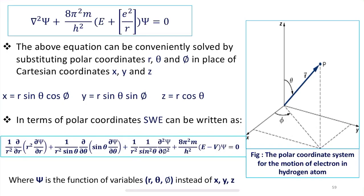The relation between the two types of coordinates is: x = R sinθ cosψ, y = R sinθ sinψ, and z = R cosθ. In terms of polar coordinates, the Schrödinger wave equation can be written by substituting polar coordinates R, θ, and ψ in place of x, y, and z, giving a new mathematical form of the equation.